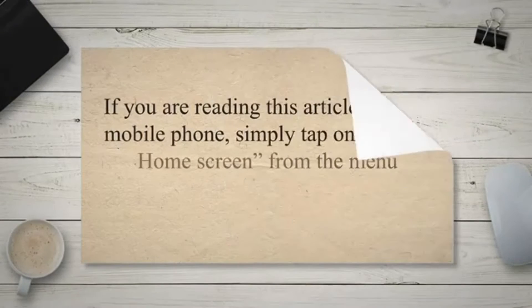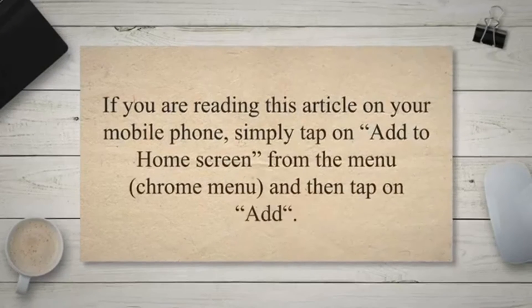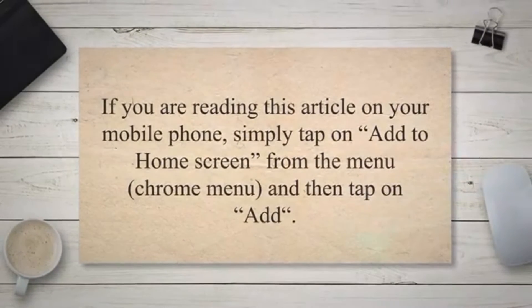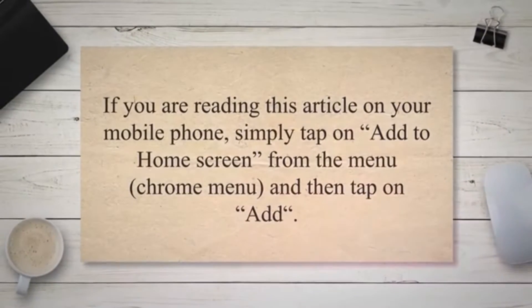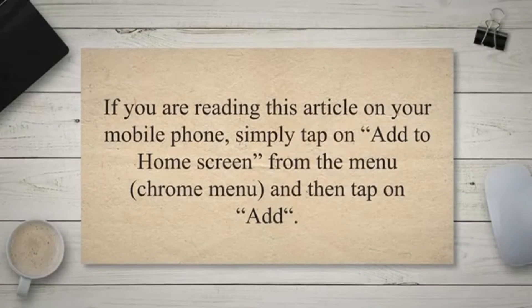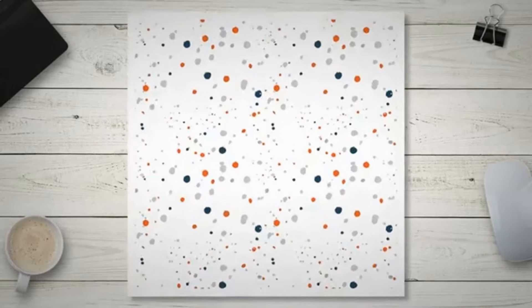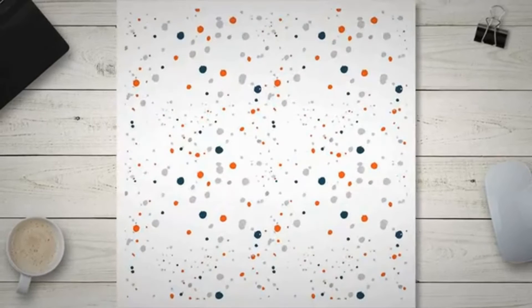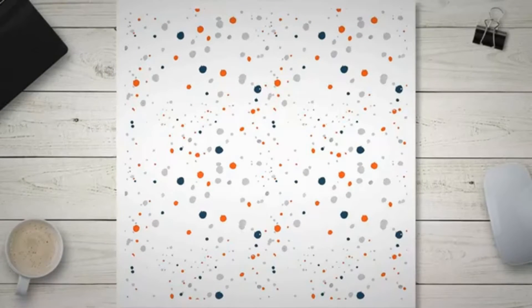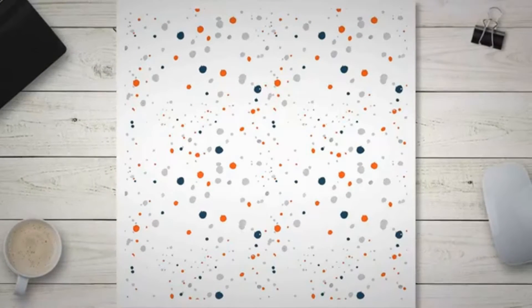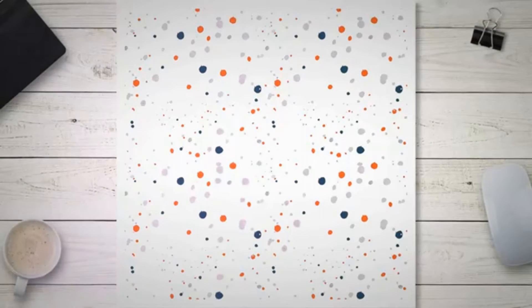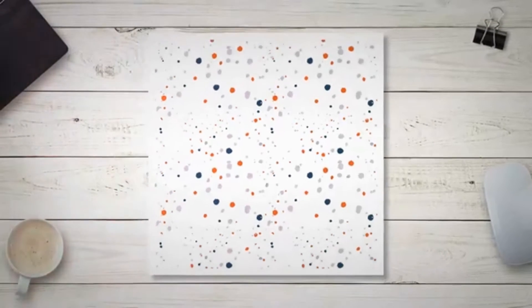If you are reading this article on your mobile phone, simply tap on add to home screen from the Chrome menu, and then tap on add. Then you will see that Techabun's PWA has been added to your phone's home screen, and when you open it, you will be able to use techabun.com just like any other app on your phone.